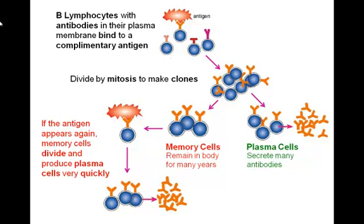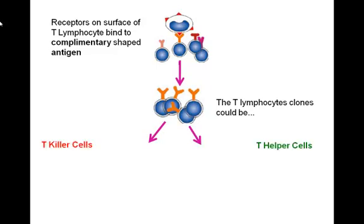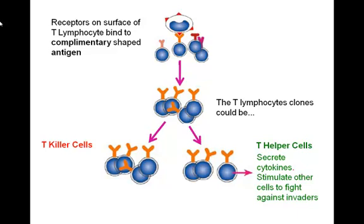What about T lymphocytes? T lymphocytes are covered in receptors that bind to antigens presented by the phagocytes. Each T lymphocyte has a different receptor on its surface, and when it meets a complementary antigen, it binds to it. There are several types of T lymphocytes, like T helper cells and T killer cells. T helper cells with a complementary receptor to an antigen divide to form clones, which then secrete chemicals called cytokines that stimulate other cells to fight against the invaders. T killer cells will typically destroy a body cell displaying virus particles.